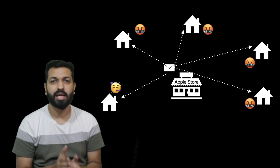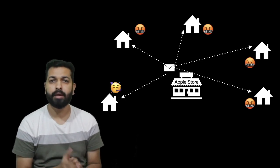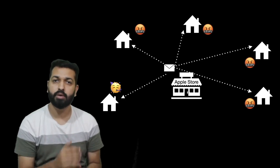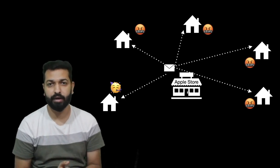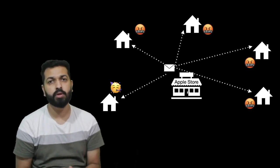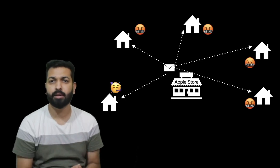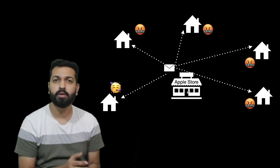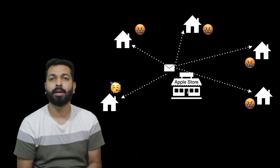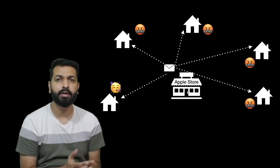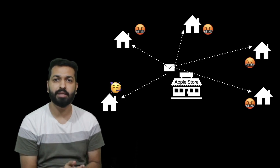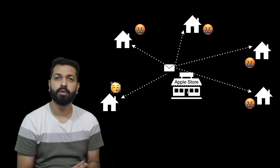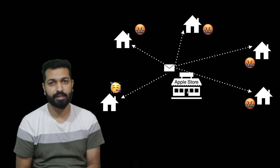For example, newspaper: you subscribe and get it daily. The moment you don't want it, you tell the delivery guy and he stops. If you want two newspapers or magazines, you subscribe and start getting them; when you don't want them, you say no. You can also relate it to radio: you tune into a particular frequency and start getting information. You change the frequency or turn off the radio, it stops. As simple as that.